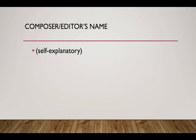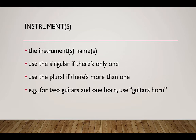Include the composer's or editor's name if you have it — this tip is fairly self-explanatory. Include the names of the instrument or instruments. Use the singular if there is only one of that type of instrument, and the plural if there is more than one. For example, for a composition with two guitars and one horn, use 'guitars, horn'.